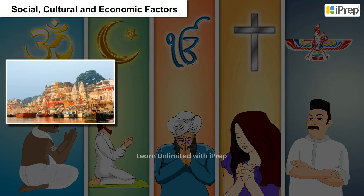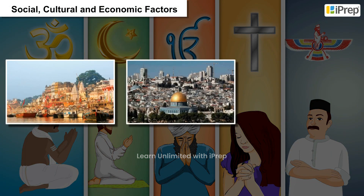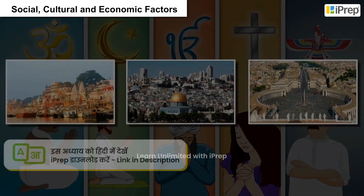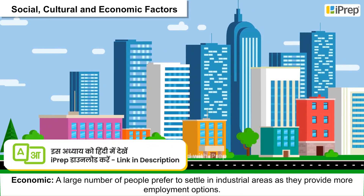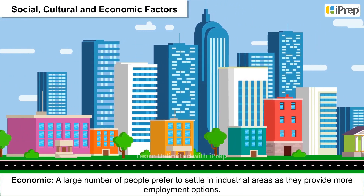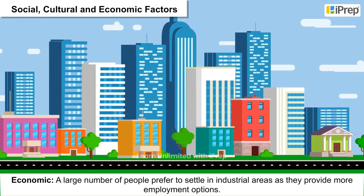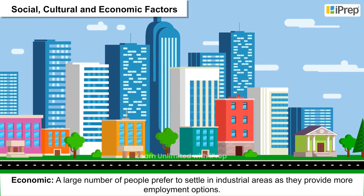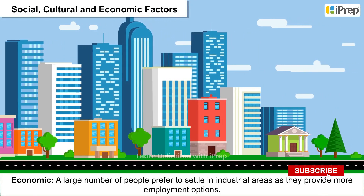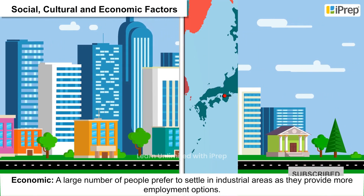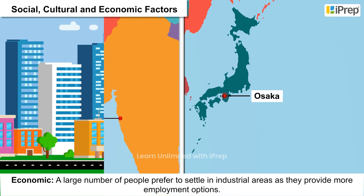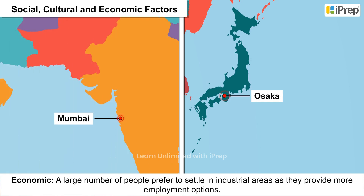Cultural: People are more attracted to places with religious or cultural importance. Example: Varanasi, Jerusalem and Vatican City. Economic: A large number of people prefer to settle in industrial areas as they provide more employment options. Example: Osaka in Japan and Mumbai in India.